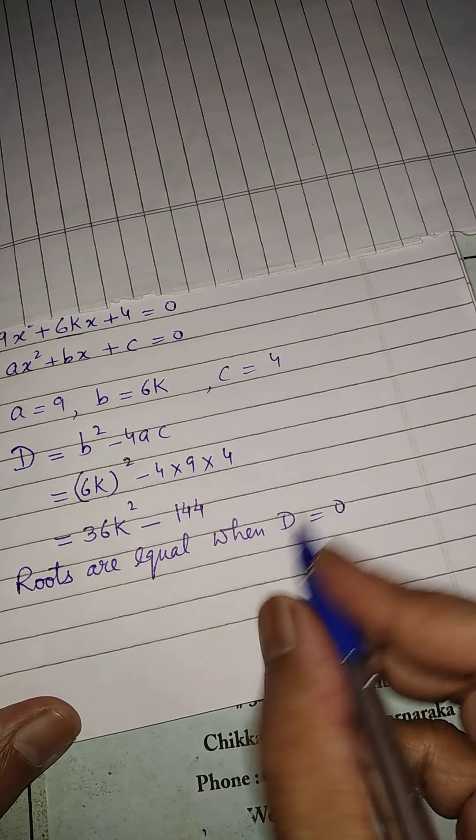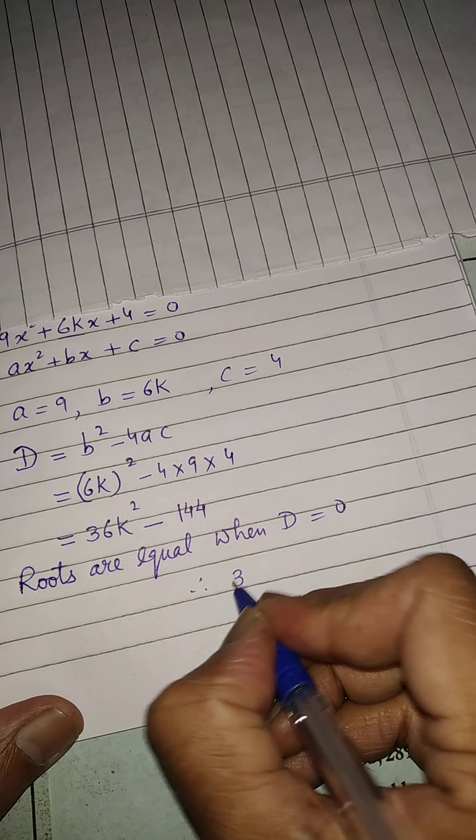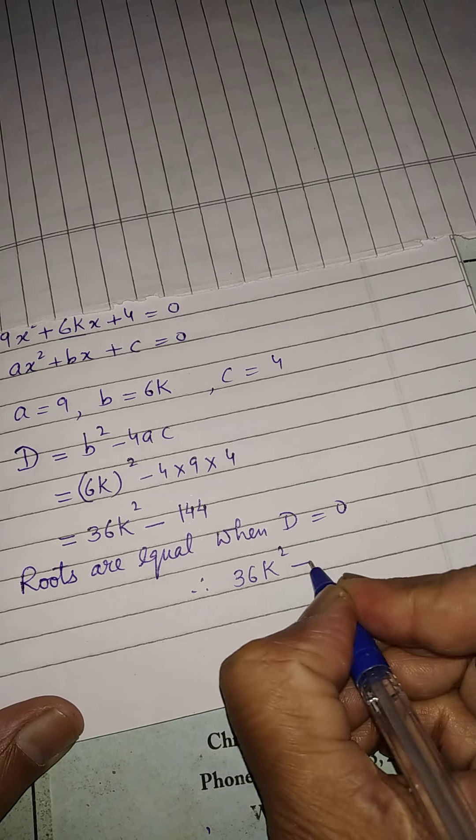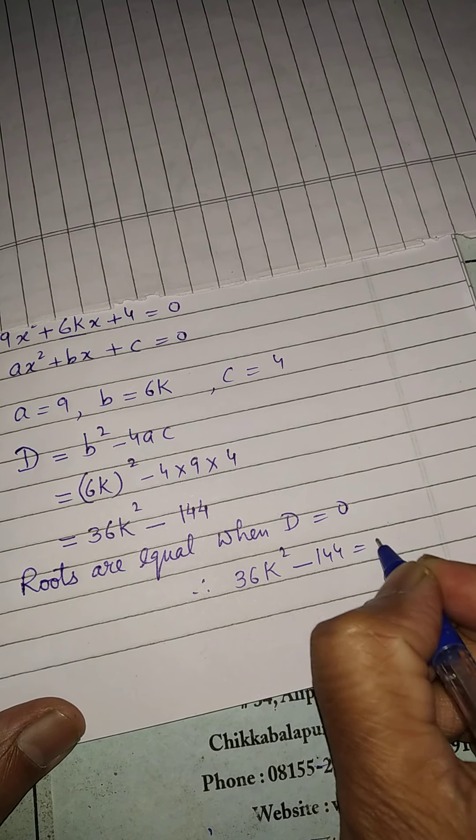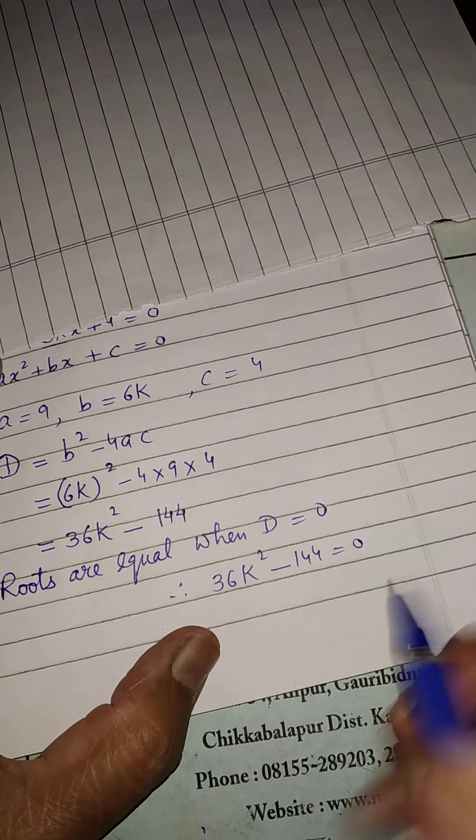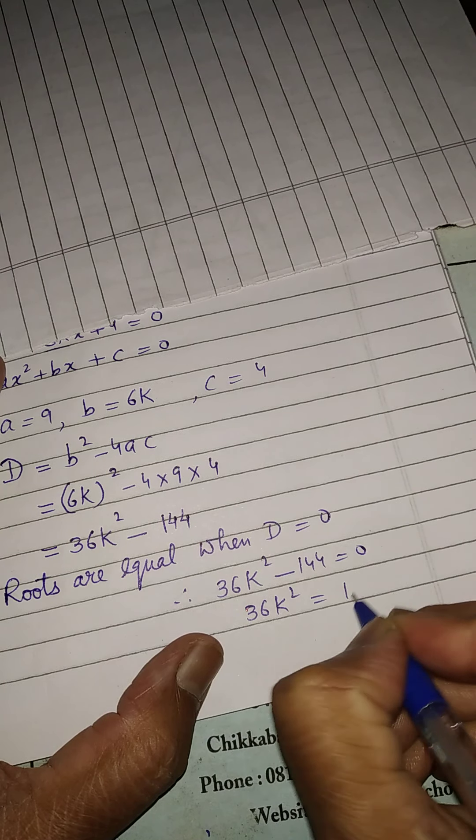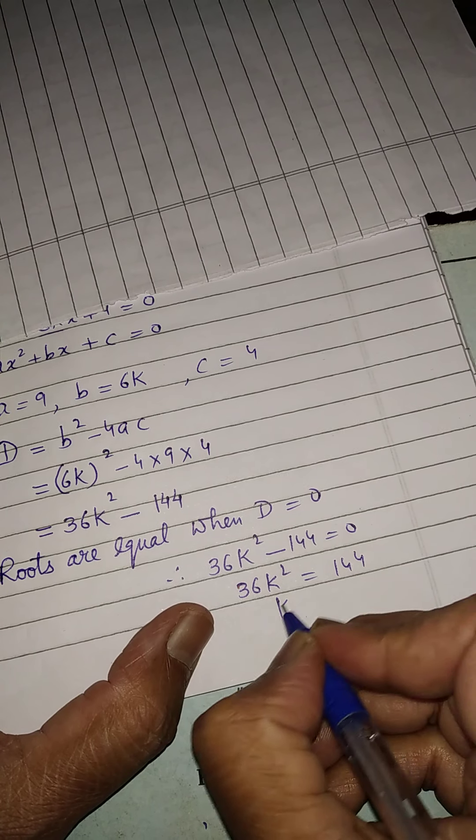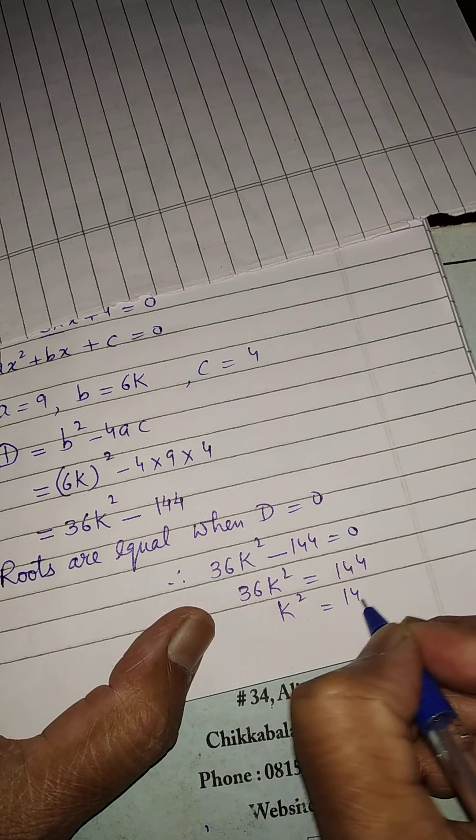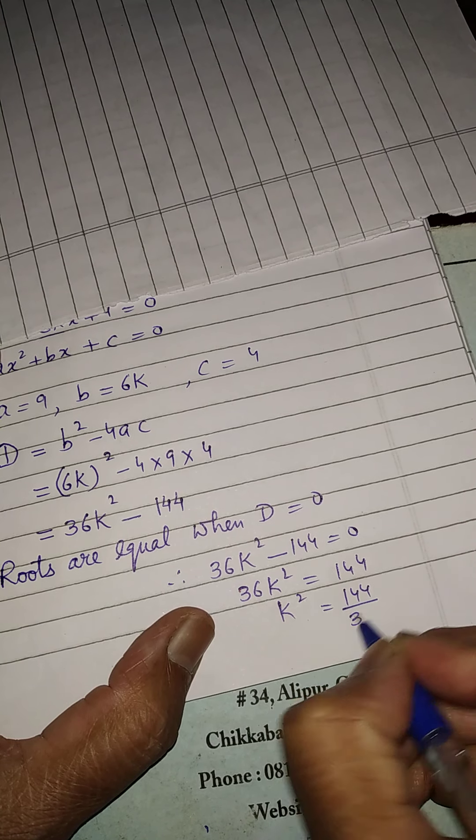So, these value, we got this one. So, we will put it here: 36k square minus 144 is equal to 0. From here, this will be transferred to that side.